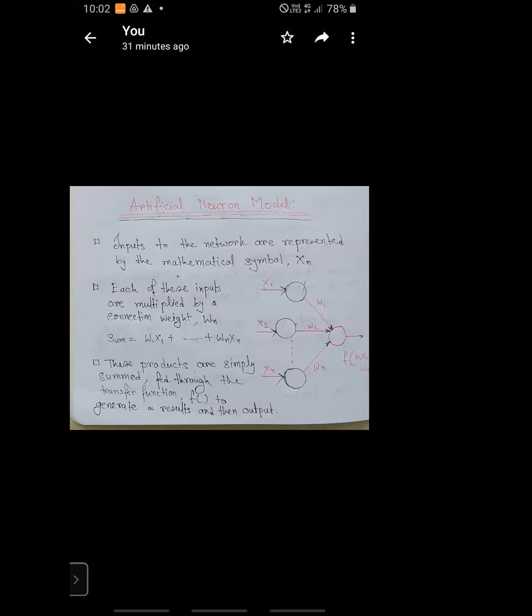Look, this is the neural network model. Yesterday you have already seen this, but now we have to go into the details. This is the artificial neural network, and the input and this network model are represented by the mathematical symbol xn.